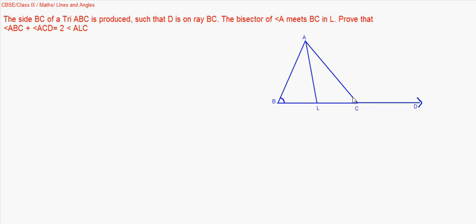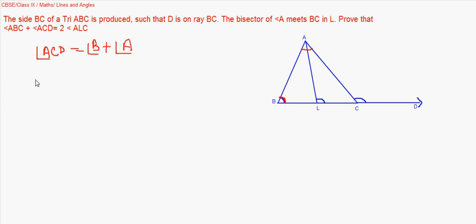We have to prove angle ABC plus angle ACD equals twice of angle ALC. Now, angle ACD — the exterior angle is equal to angle B plus angle A, because the exterior angle equals the sum of the two opposite interior angles. So those two angles equal angle ACD.